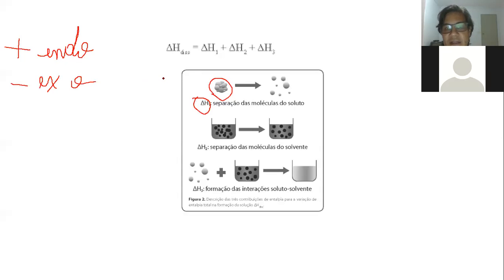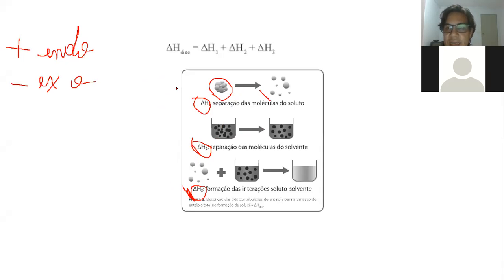Eu tenho três processos de liberação ou absorção de calor: delta 1, delta 2 e delta 3. No delta 1 é a separação do soluto, no delta 2 é a separação do solvente, e no delta 3 é a mistura do soluto com o solvente. E aí eu vou saber se a dissolução é endotérmica ou exotérmica somando os três valores de entalpia.